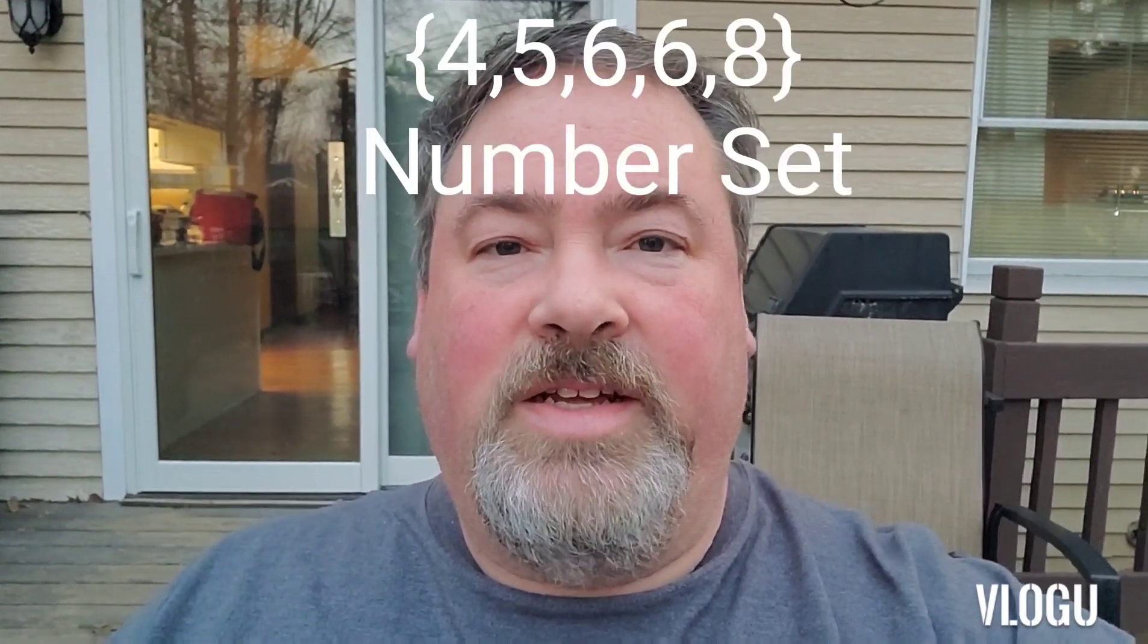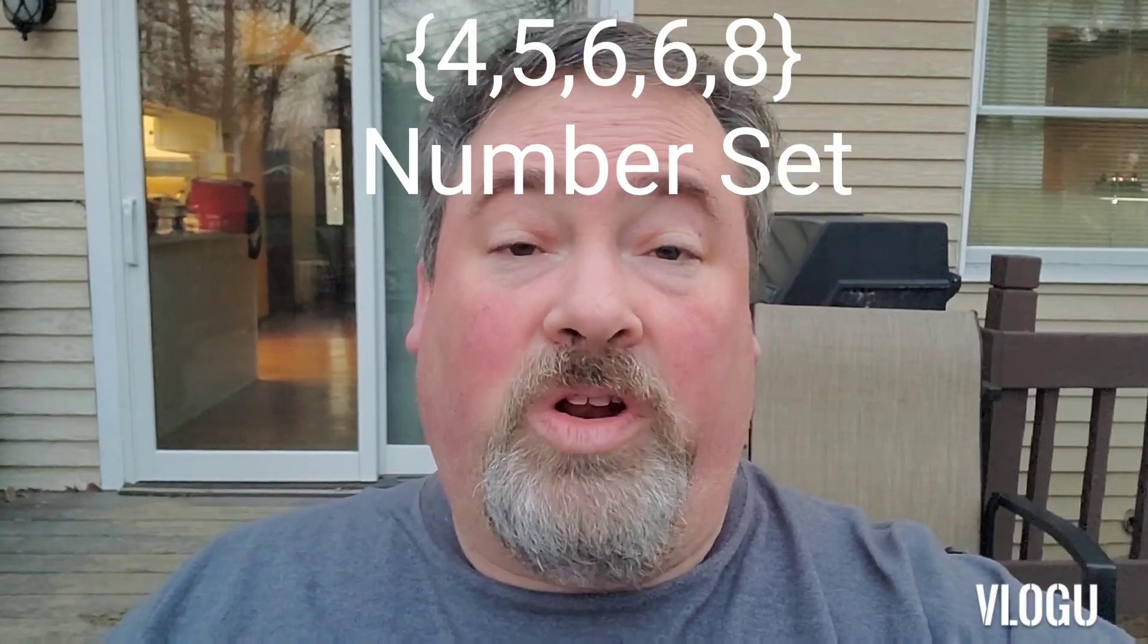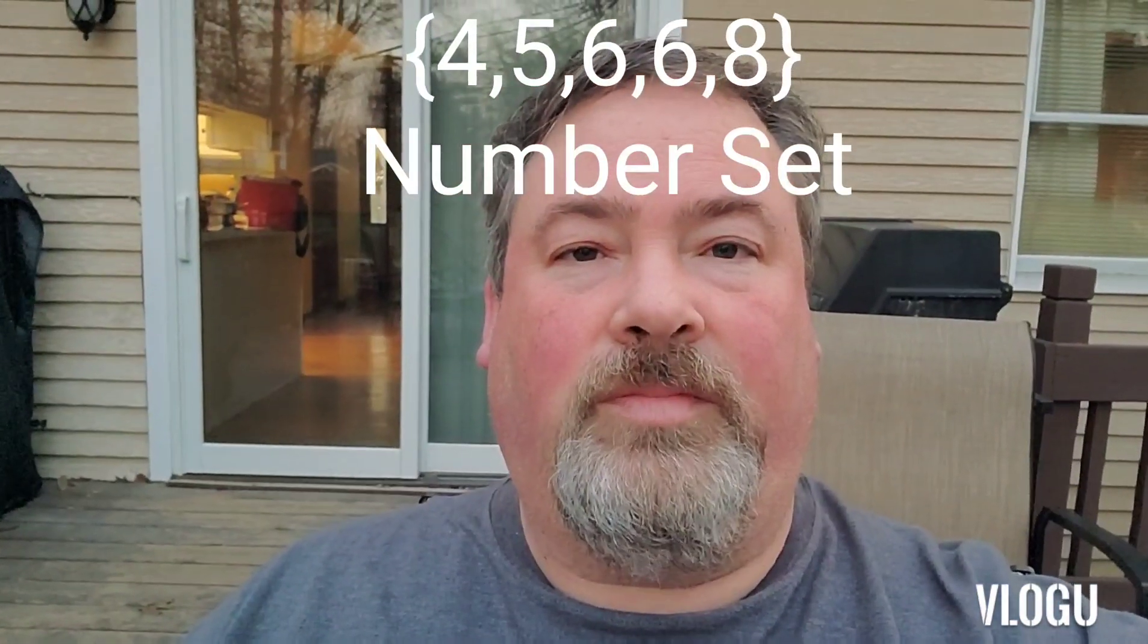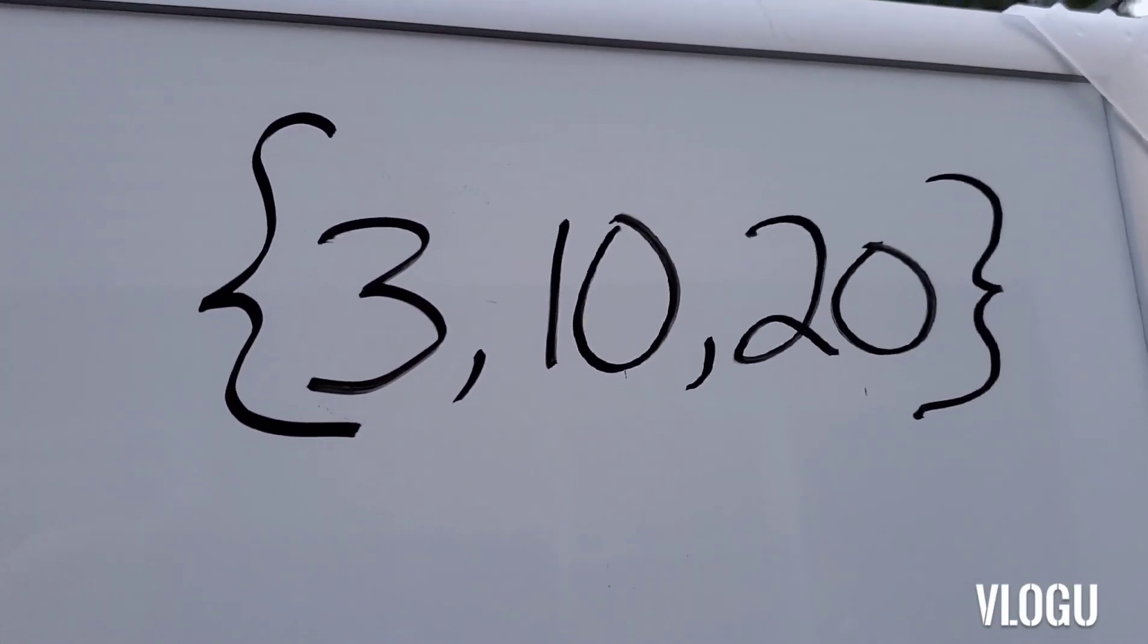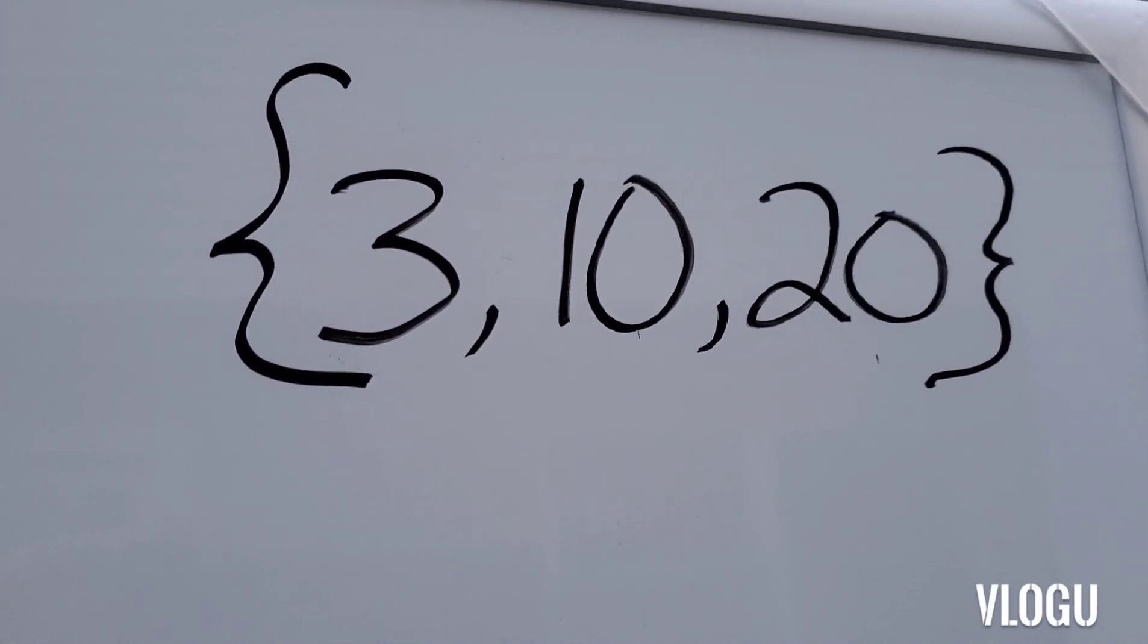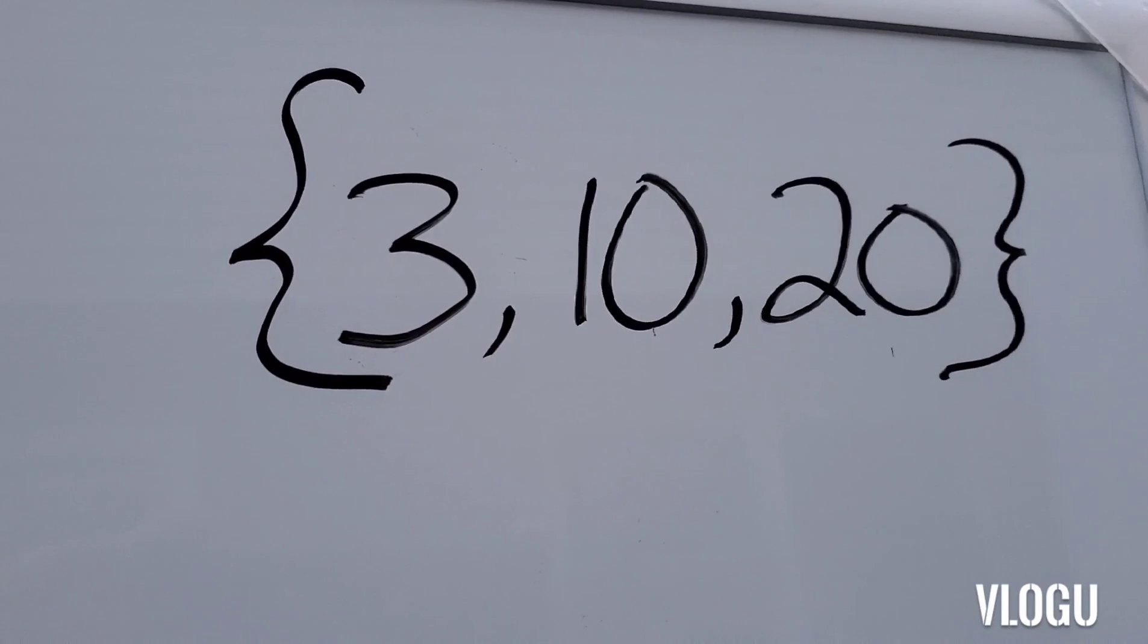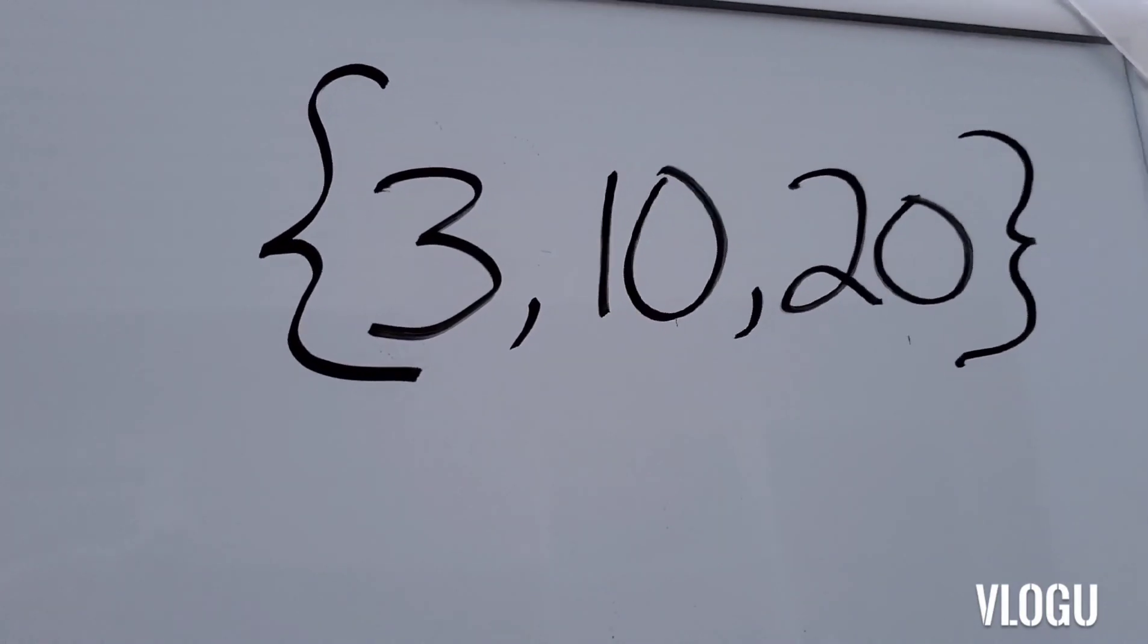So, the first thing we're going to talk about. A number set is a collection of numbers assembled in numerical order inside what are technically called curly brackets. And a number set looks a little like this. This is a number set. The numbers we have are in numerical order. 3, 10, 20. They are separated by commas and are enclosed in a curly bracket. This is what a number set looks like. And this particular set only has three numbers in it.